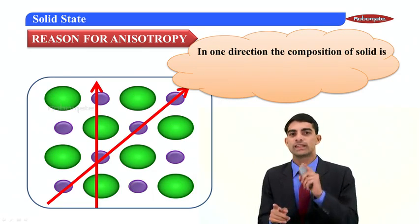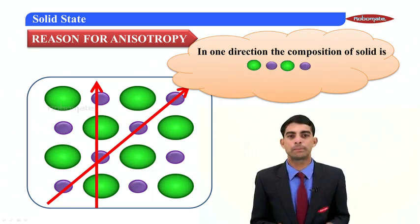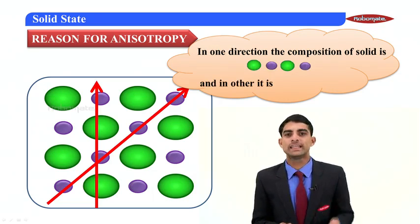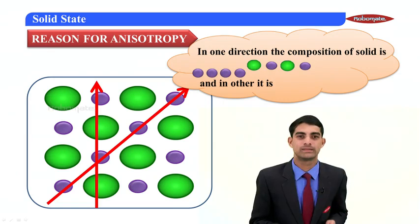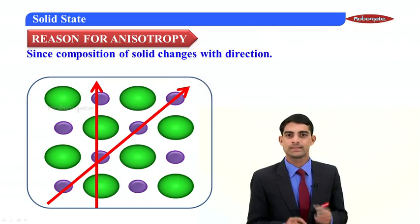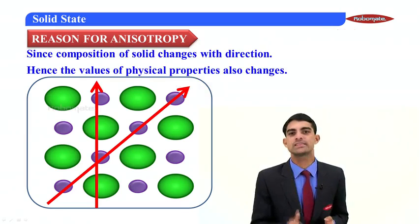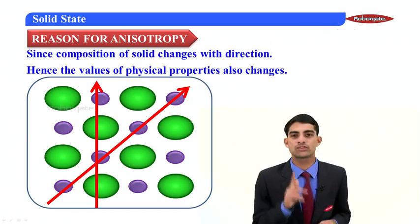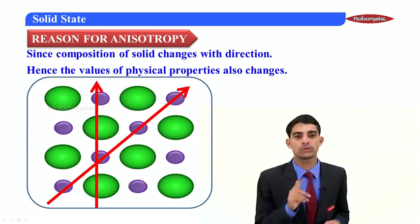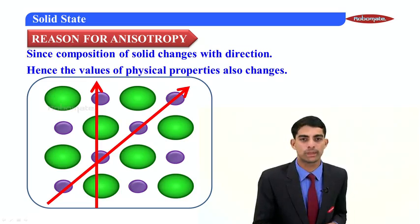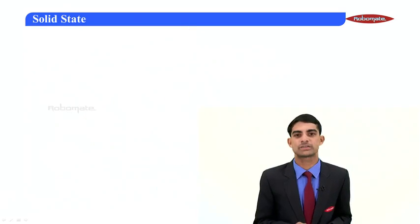In one direction, the composition of the solid is green-purple, green-purple, purple-purple, and in the other direction it is purple-purple, purple-purple. Since the composition of the solid changes with direction, the values of physical properties also change, therefore it exhibits anisotropic nature. Therefore, crystalline solids are anisotropic in nature.